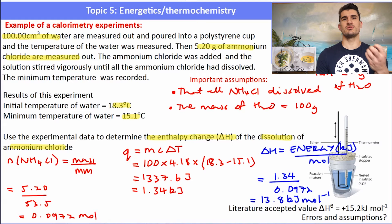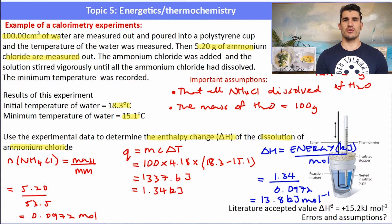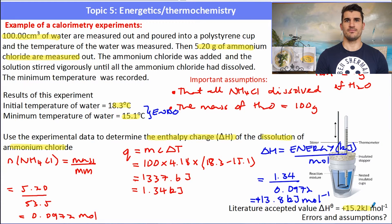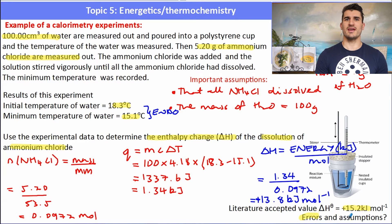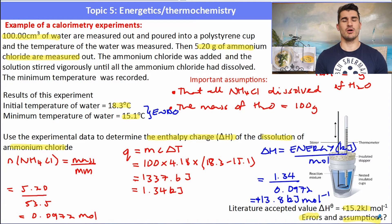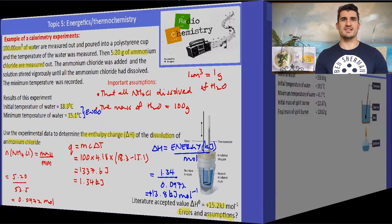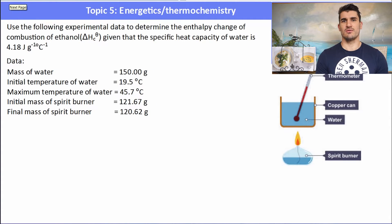The unit kilojoules per mole is very important. Because the reaction absorbed energy, it was endothermic, so I put a positive sign in front: +13.8 kJ/mol. The temperature went down, confirming it's endothermic. The literature value is 15.2 kJ/mol — we're close but there are some errors, such as heat loss to the environment or measurement issues. The key assumptions were that all NH₄Cl dissolved and that the mass of water remained constant.